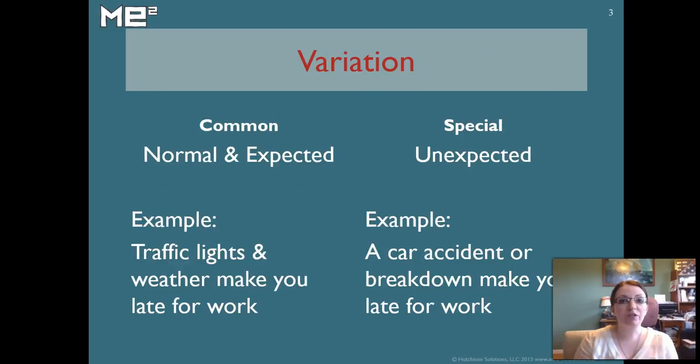Variation is broken into two different categories. There's common variation and special variation. Common variation is stuff you expect to happen. It's normal human error or a normal part of the system. For example, your commute is going to vary every day because traffic lights are going to be a little bit different and weather is going to change. That's normal variation. You expect that to happen.